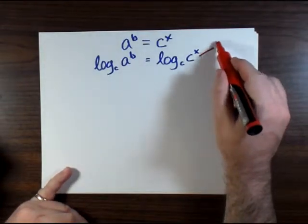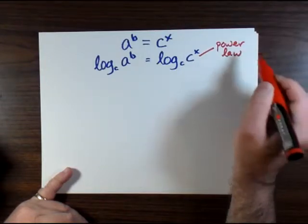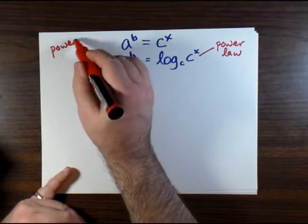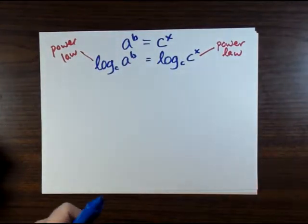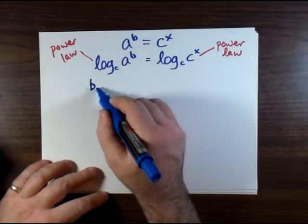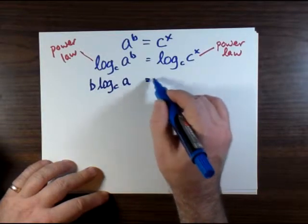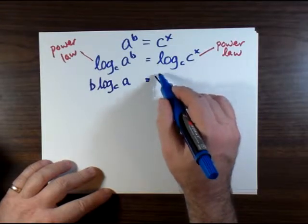Now, this becomes by the power law, b log base c of a equals log base c of c all multiplied by x. We're intending to use the power law on both sides simply because we have numbers raised to a power on both sides. And that becomes b times the base c log of a equals x times the base c log of c.